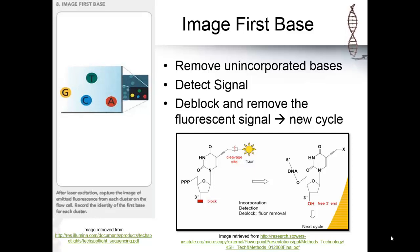The next step is to image the first base. Each nucleotide base - adenine, thymine, guanosine, and cytosine - have a unique fluorescent color attached to them.